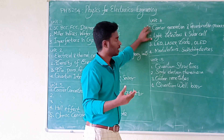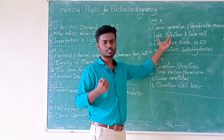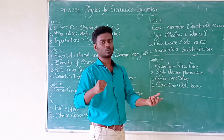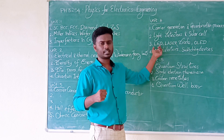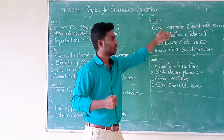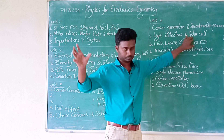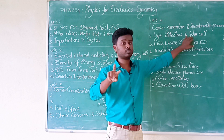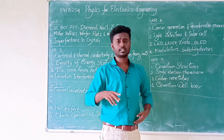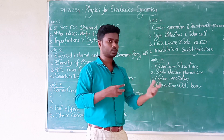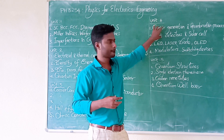Next: light detectors and solar cells. Solar cells absorb light. Light detectors capture the signal. Then: LED and laser diodes — LED stands for Light Emitting Diode. Solar cells operate under reverse bias. LED and laser diodes operate under forward bias.